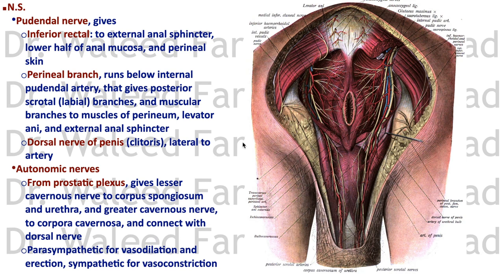The nerve supply comes from the pudendal nerve. It has an inferior rectal branch in the pudendal canal to the external anal sphincter and lower half of the anal mucosa. It has a perineal branch that runs below the internal pudendal artery and gives posterior scrotal branches, or labial branches in females, and muscular branches supplying the levator ani and the external anal sphincter. There is also a dorsal nerve of the penis, lateral to the artery, within the layers of the fascia of the penis.